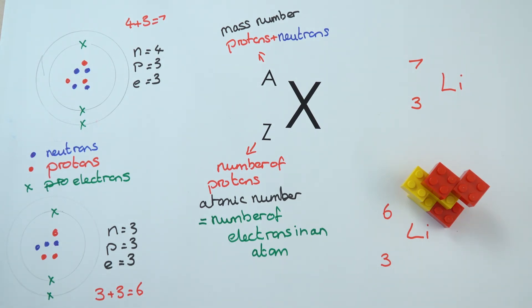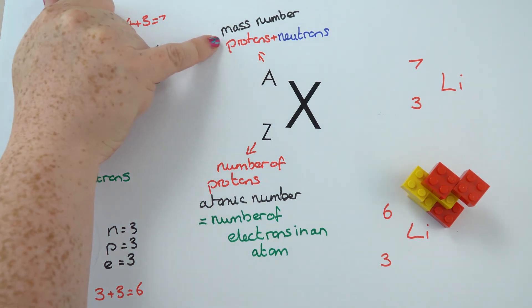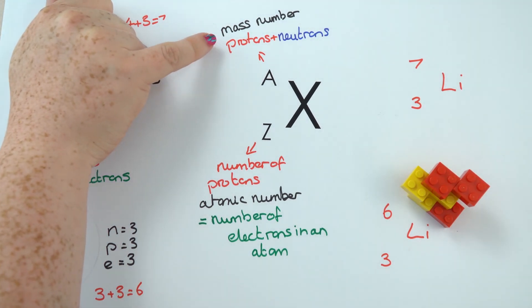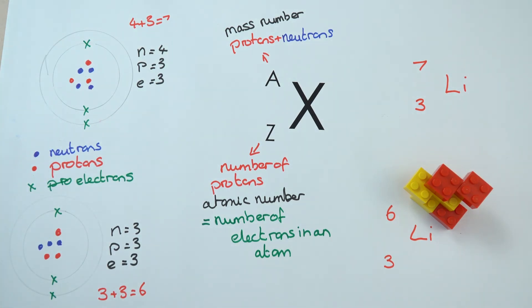Isotopes are naturally occurring, they occur all over the place. And the mass number that you see on the periodic table is actually an average of all the naturally occurring isotopes.